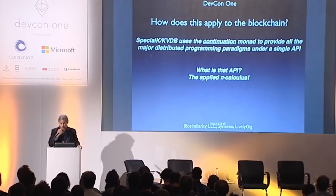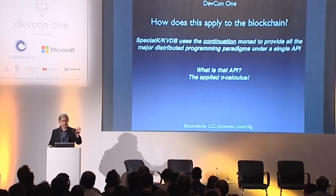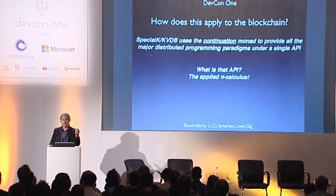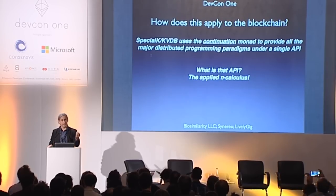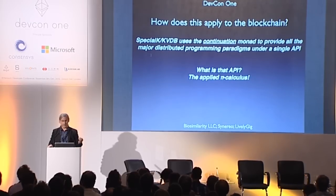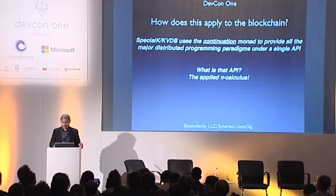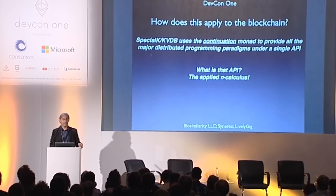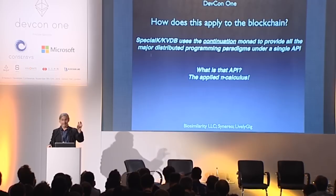How does this apply to the blockchain? The continuation monad is the monad underlying the ability to bring those patterns together. It's the structuring of the continuations and the way we store them that uses the continuation monad to provide that unification of all those programming paradigms. If you just tilt that API on its side a little bit, what you end up getting is the applied pi calculus — and that's exactly how Special K is organized.